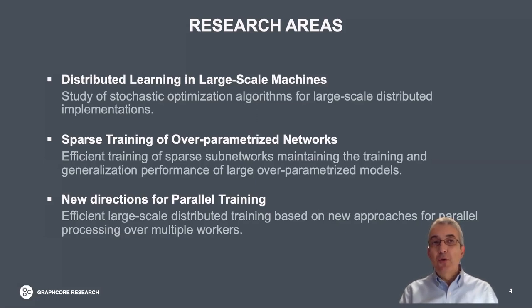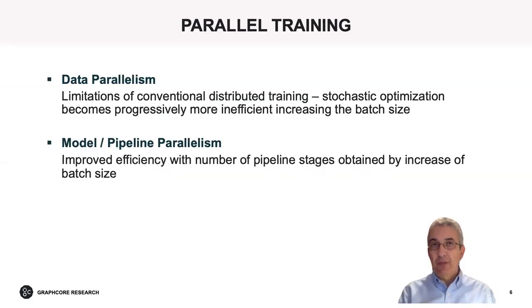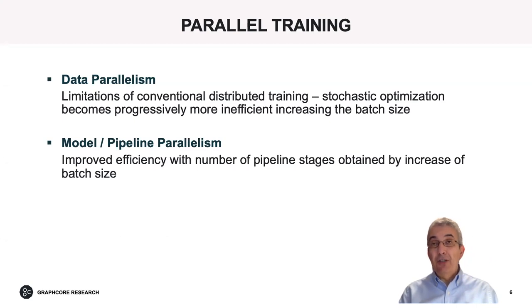The presentation will also go through some additional new directions for parallel training. These cover several ways of making the best use of parallel computation over an increasingly large number of processes. The conventional ways to tackle this are through data parallelism and model and pipeline parallelism. Data parallelism has been extremely successful in speeding up training by distributing stochastic gradient descent over an increasing number of workers by increasing the batch size. The problem is that stochastic optimization algorithms become less efficient as the batch size grows larger.